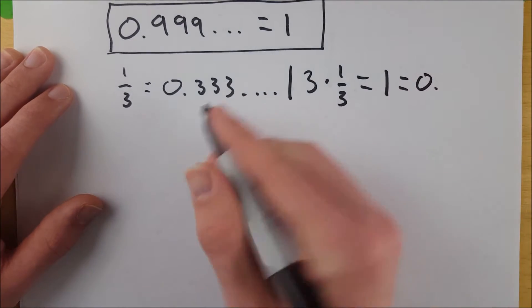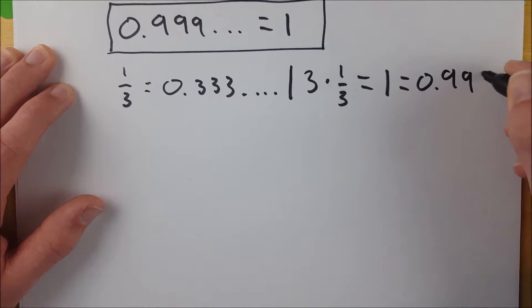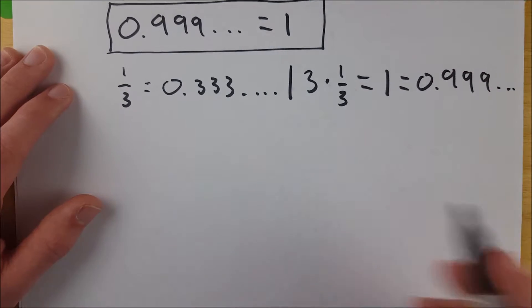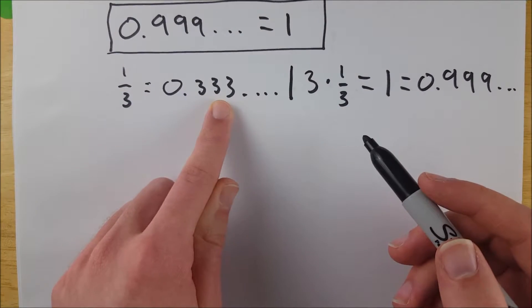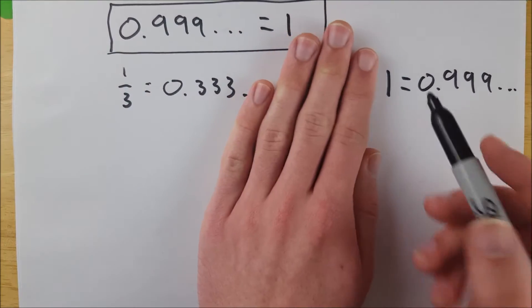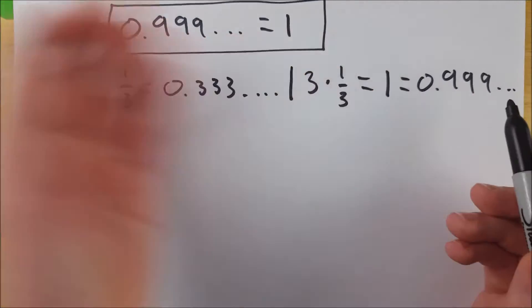And then we multiply this by 3, and we just get 9 in every decimal place going on forever. That's just 0.999 repeating forever. Hey, look at that. That's our result. One-third is equal to this, so if we multiply both sides by 3, we get 1 is equal to that. That is equal to 1, as we knew.